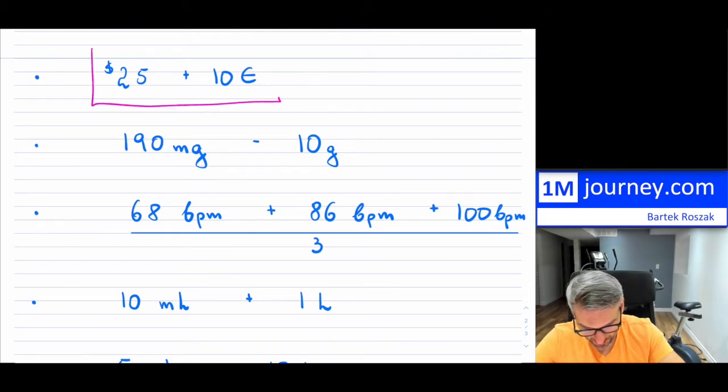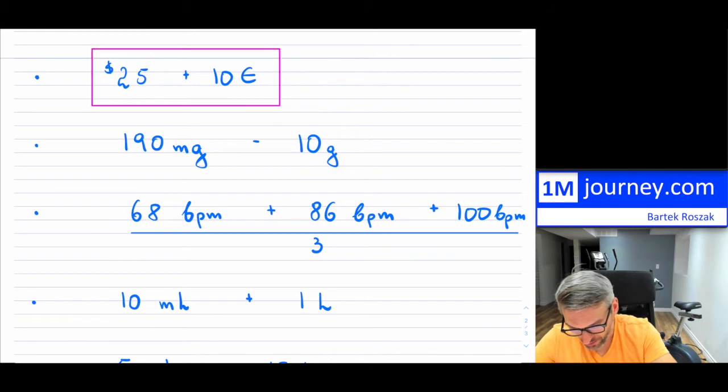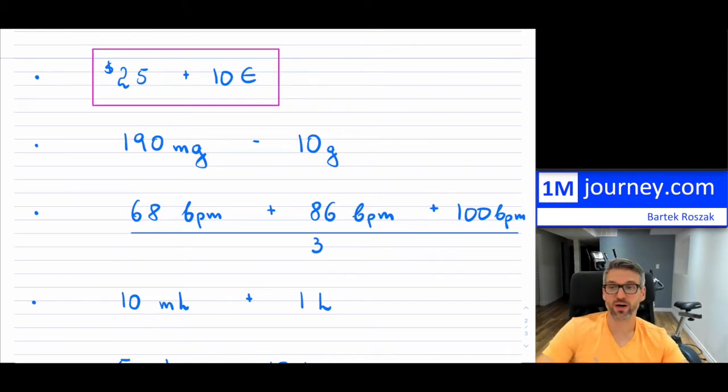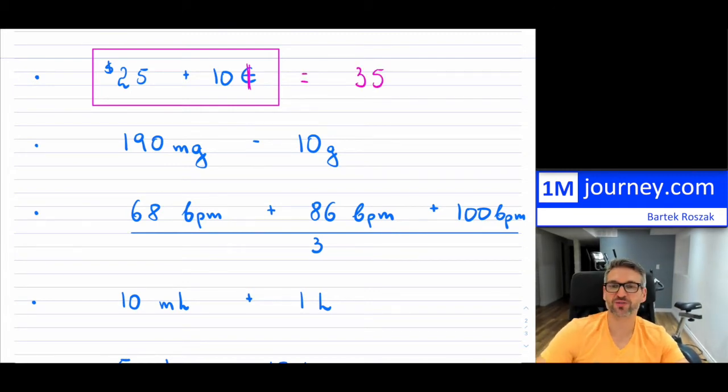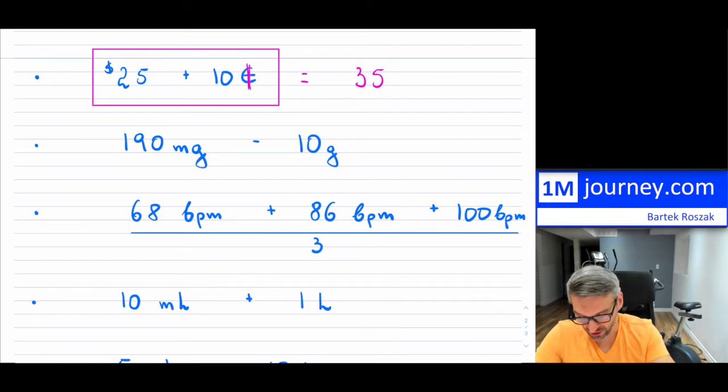So for instance, here for our first example right here, now people are very aware that one is $25 and then the other one, you may not be as familiar with that symbol, it's kind of 10 euros. I guess they typically put little two lines through that as well. Now, if you want to be able to add that, you can't just blindly say this is 35 because it's 35 what? When one is in dollars, so maybe that's in US dollars, and then this one is in euros.